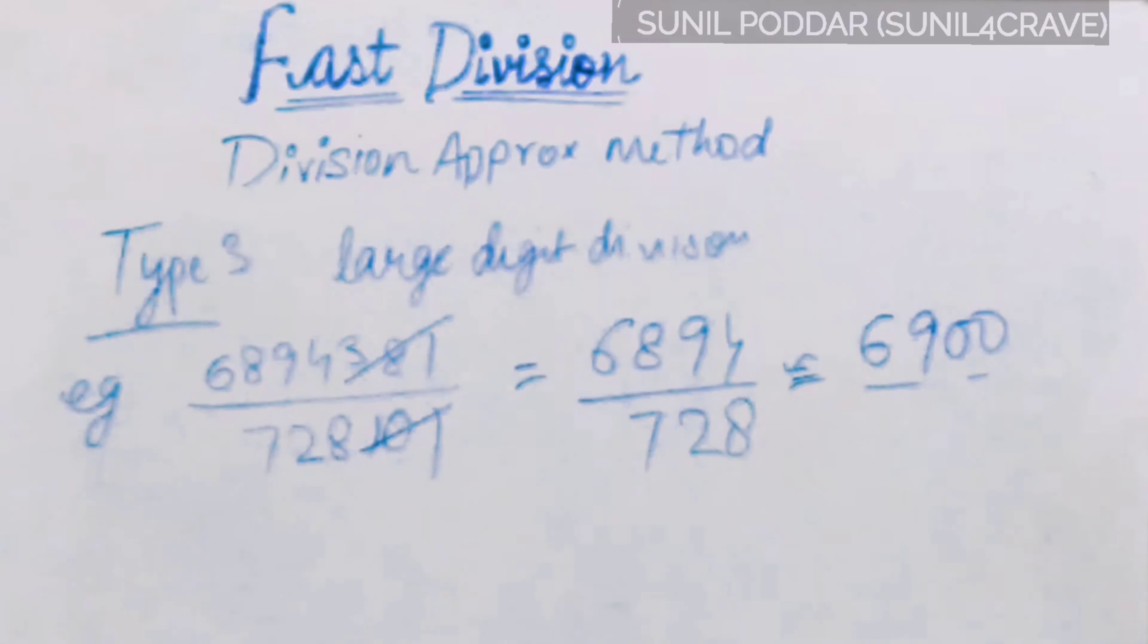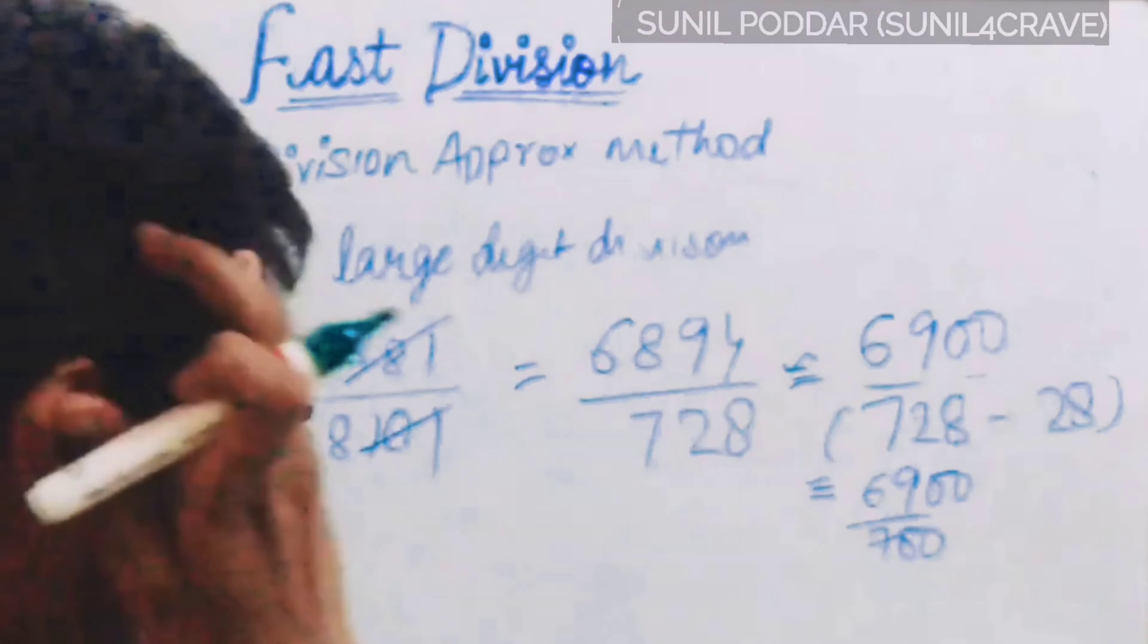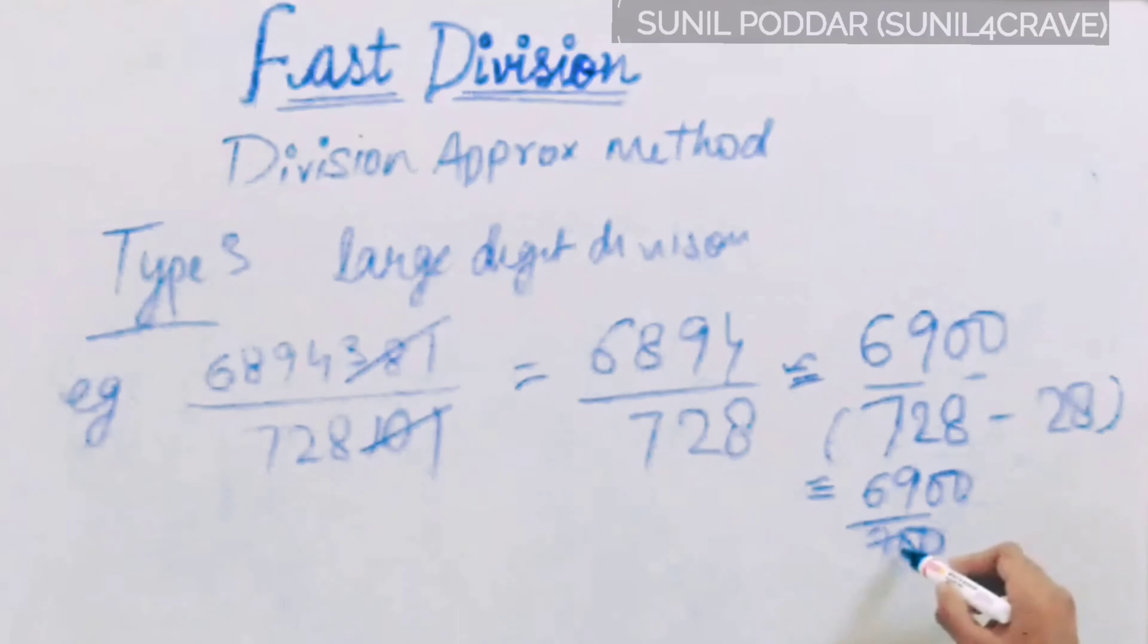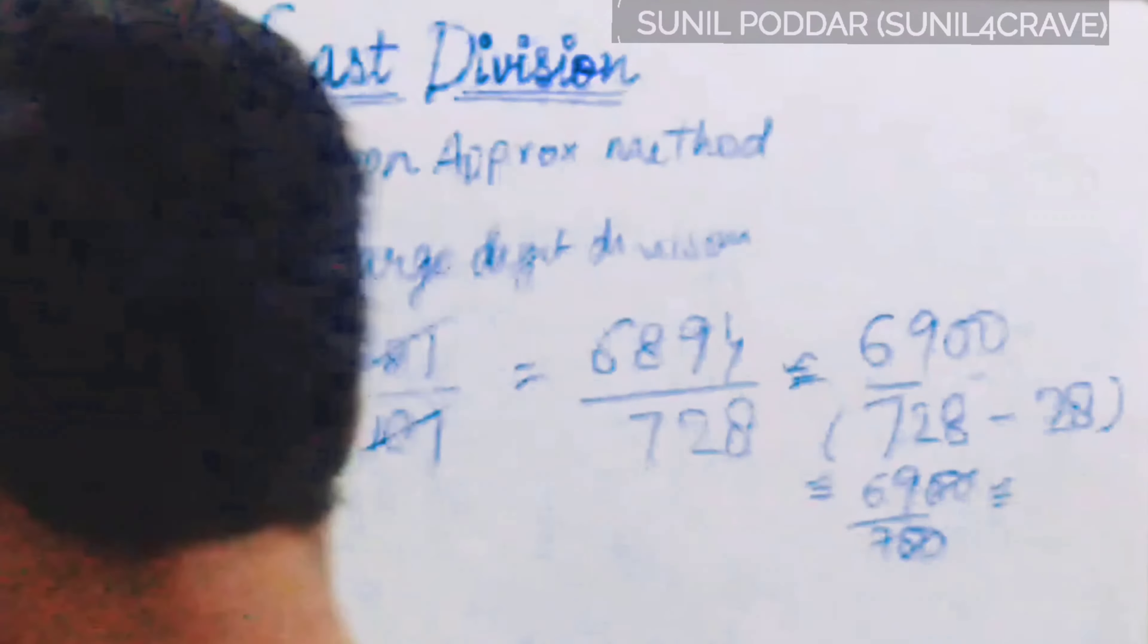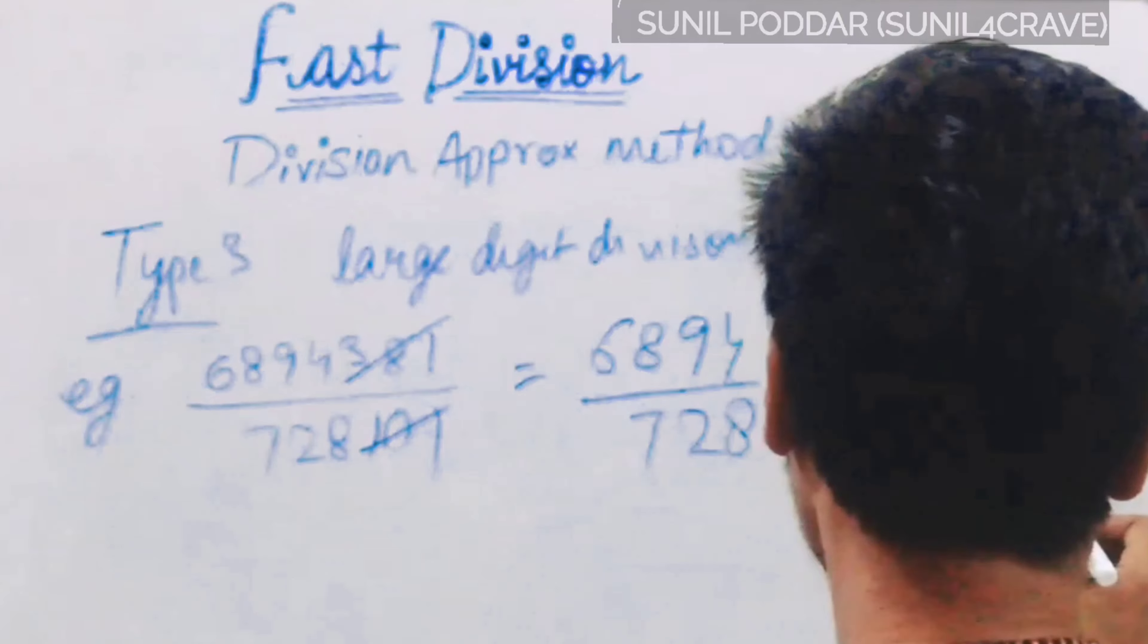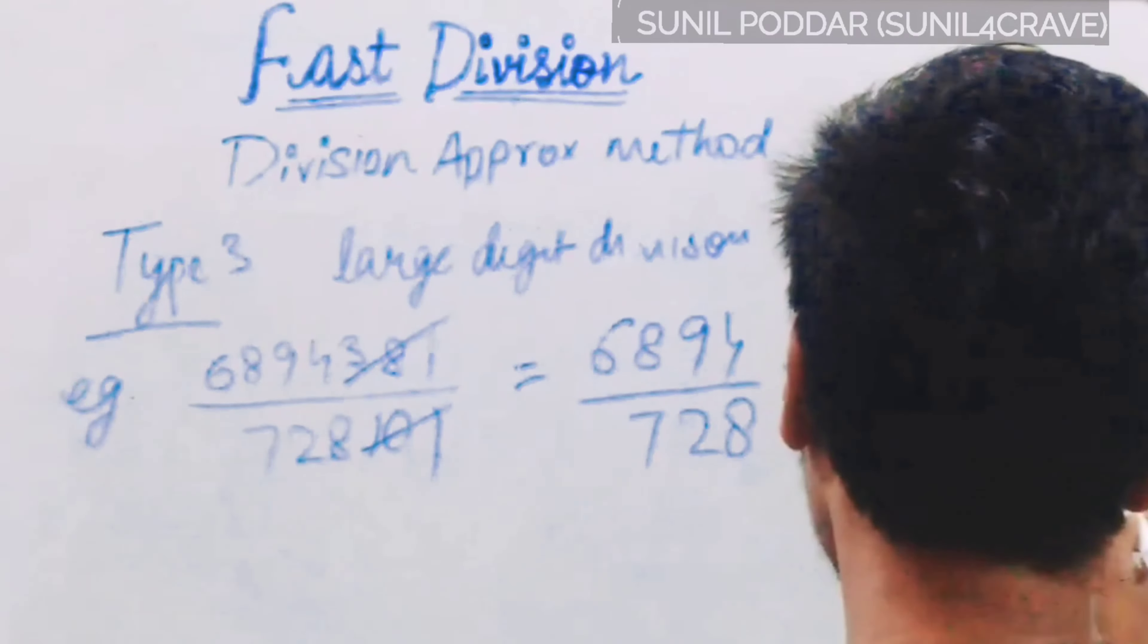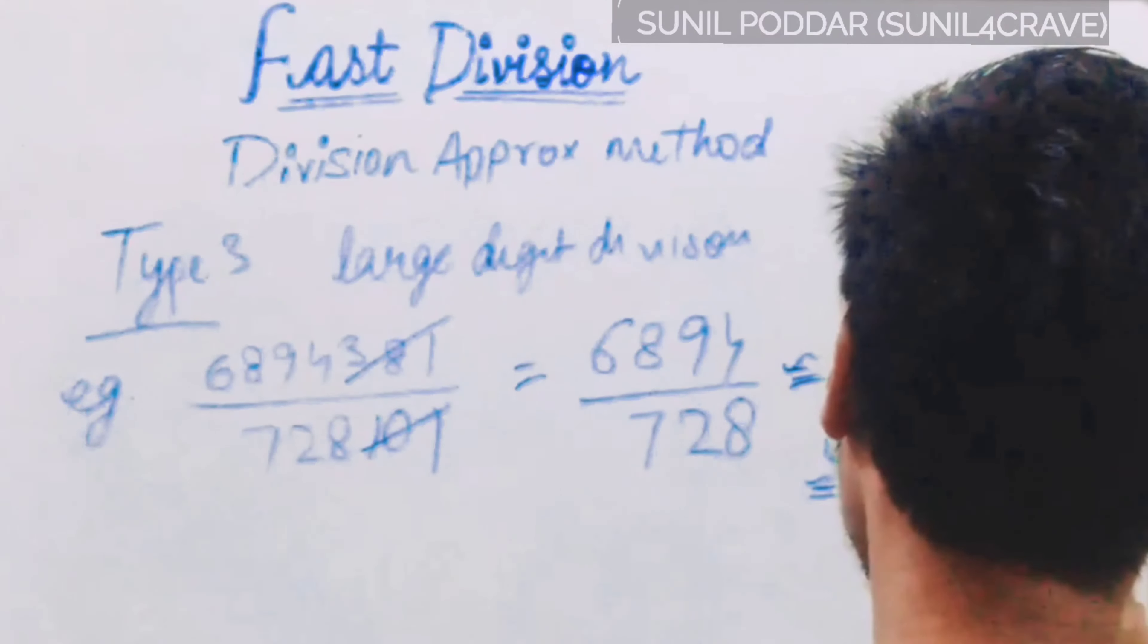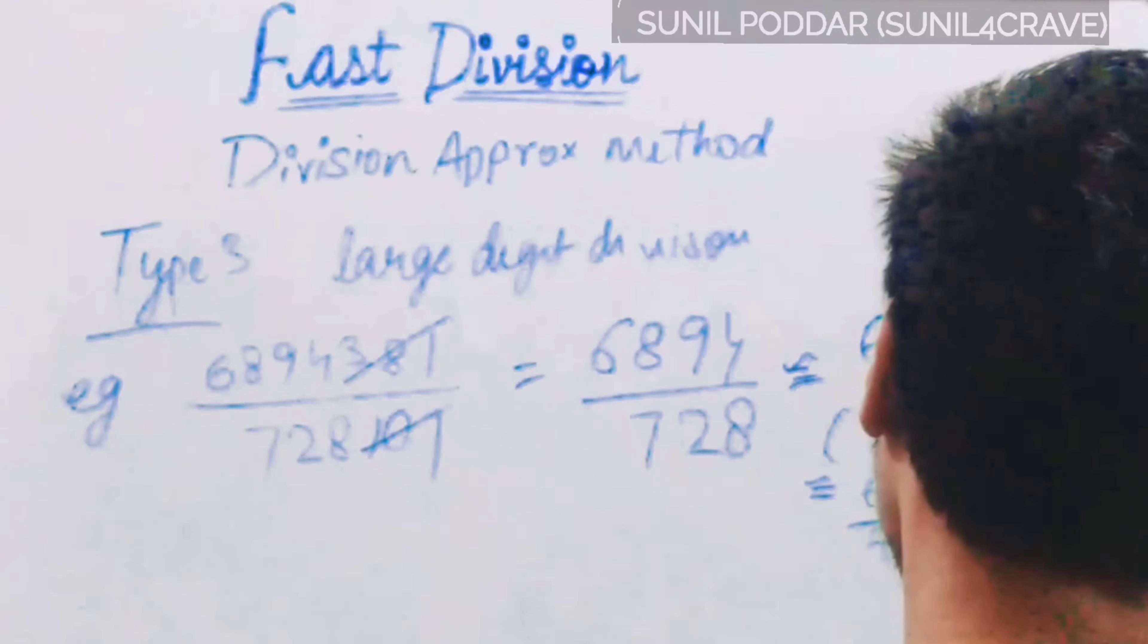Means for 6,900 upon 700, for 1 unit we have 9.85 value. As we have subtracted minus 28 here to make it 700, first we have to keep 6,894 here.